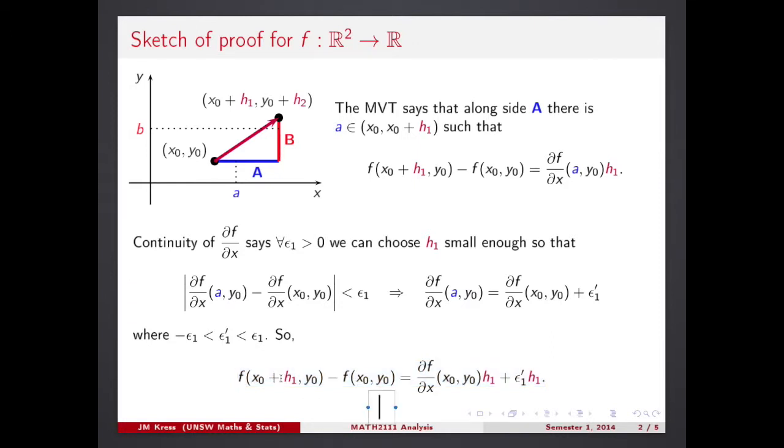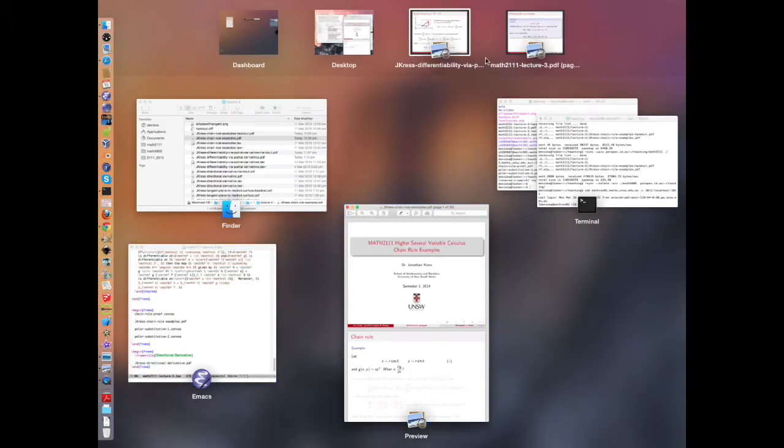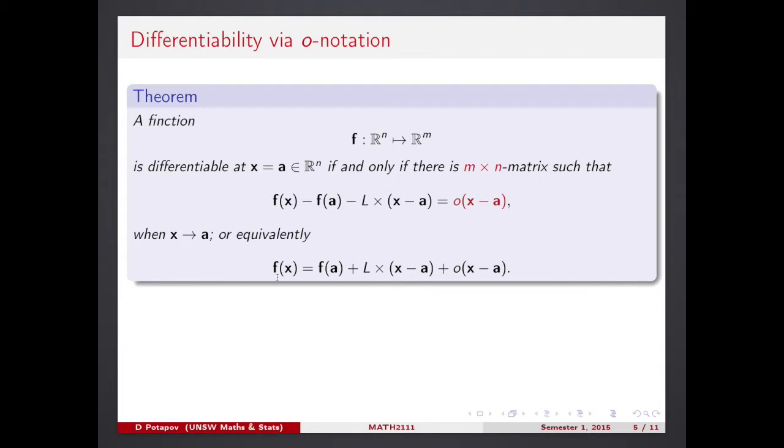Let me just quickly go back to the infinitesimally small definition. Look at this, what it says. It says f of x take f of a, then take linear factor. So, difference between the arguments times some number or metrics, numerical metrics, and then something smaller than the difference between the arguments. Just take a picture of that.